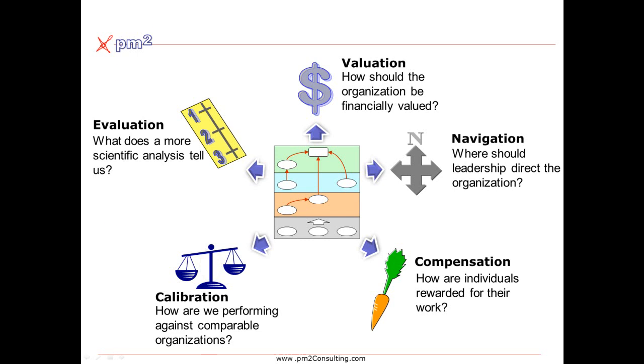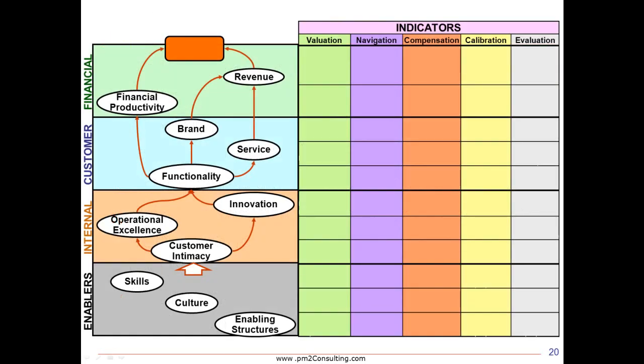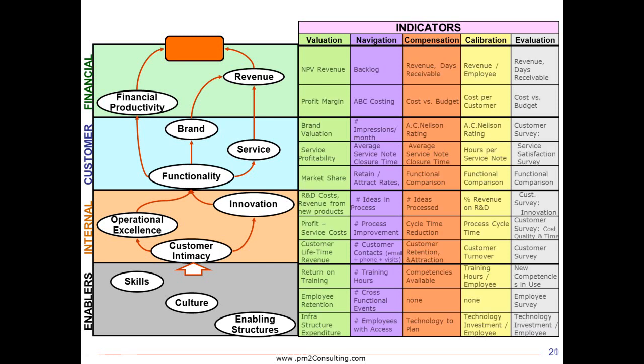So, for example, we could actually take a strategy map and think of the strategy map as transcending time, but each of these performance metrics being used in different applications of that strategy map. For example, if we took the strategy map and listed the objectives down the left, we could list these five types of strategy maps across the top and begin to determine what indicators would work in each context.